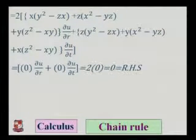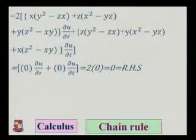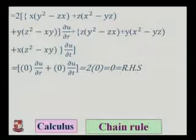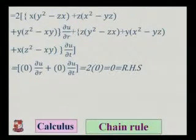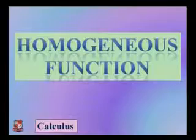Simplifying, we can see that all terms cancel and both coefficients equal 0. So 0 times del u by del r plus 0 times del u by del t equals 0, which proves the identity. These are the examples of chain rule.